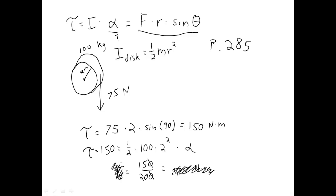We're solving for angular acceleration, not torque, so the answer is 0.75 radians per second squared. Always double-check your work and make sure you know what you're solving for. I think that pretty much takes care of everything.